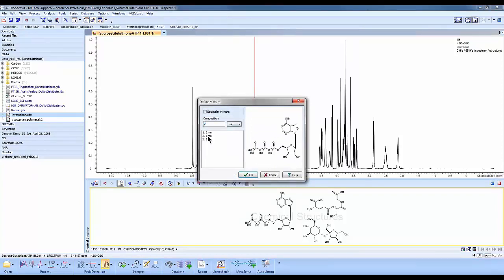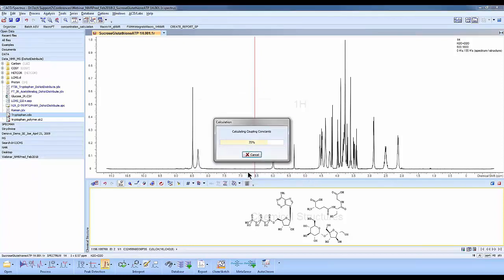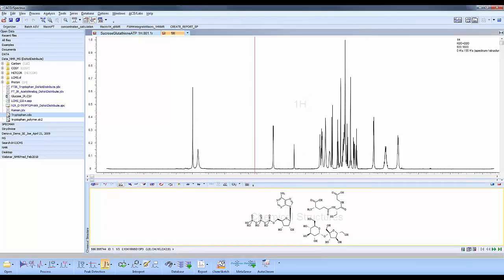We'll put the ATP to 2, a ratio of 2, and the glutathione to a ratio of 2. Click OK. It'll do a prediction for the mixture of components at different ratios.